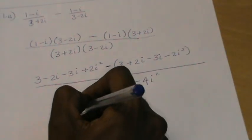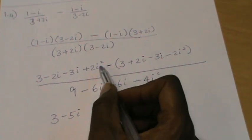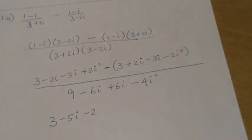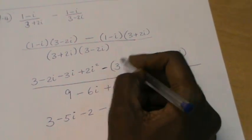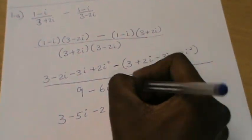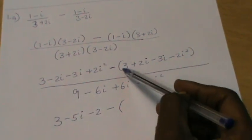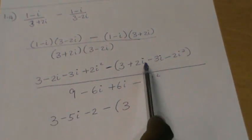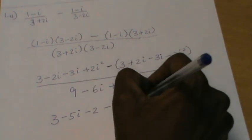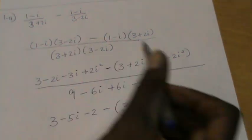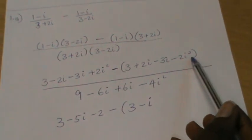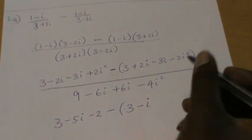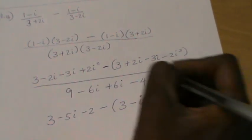In the first numerator part I have 3, then minus 2i minus 3i is minus 5i, and then 2 times i squared — remember i squared is minus 1 — so I have 2 times minus 1, which is minus 2. Then in the bracket being subtracted I have 3, and 2i minus 3i is minus i, and then minus 2 times i squared — i squared is minus 1 — so minus 2 times minus 1 is positive 2.